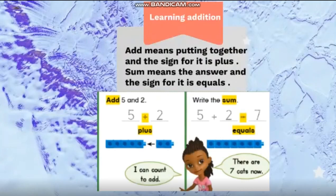And this will equal seven, as I explained before. So the sign equals means that I am finding the sum of five and two.